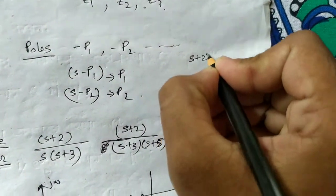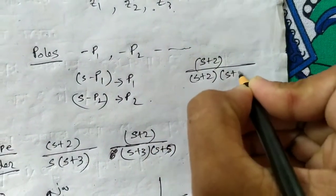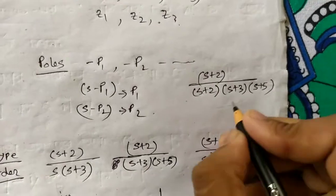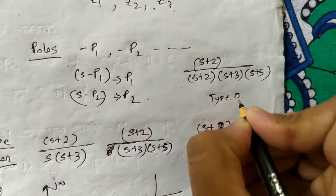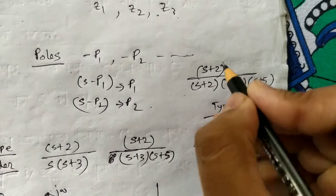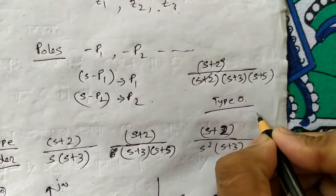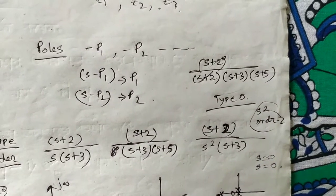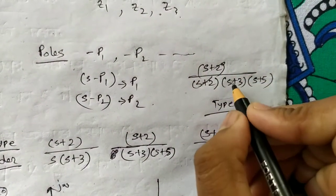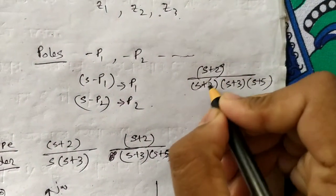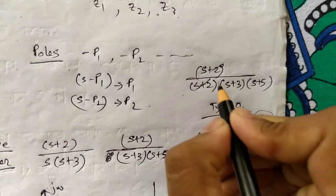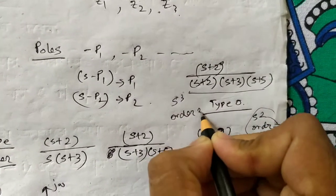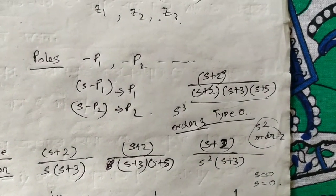If a transfer function is given as (S + 2) over (S + 2)(S + 3)(S + 5), you are asked about type and order. The type is clearly zero. For the order, don't cancel the (S + 2) terms — that is a mistake. These terms are a different concept; they are kept to maintain the transfer function. So you calculate all denominator terms: S cubed, and the order is 3.